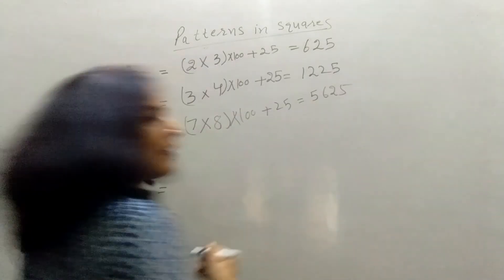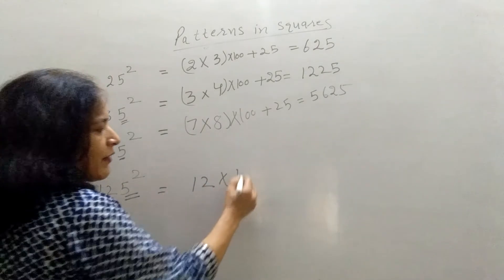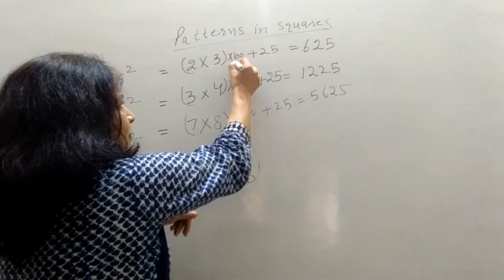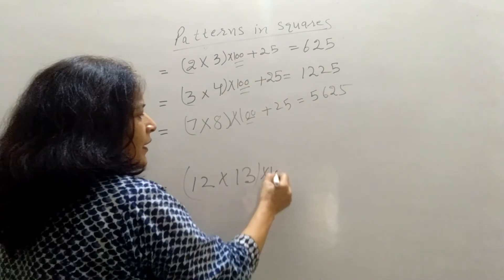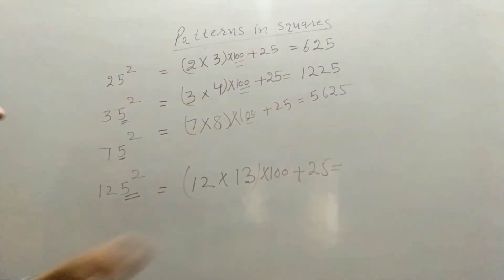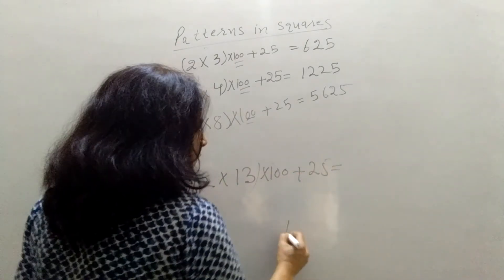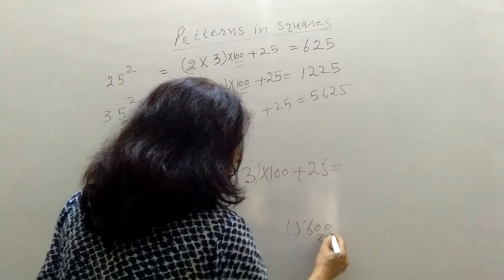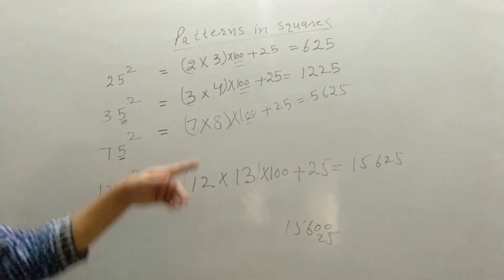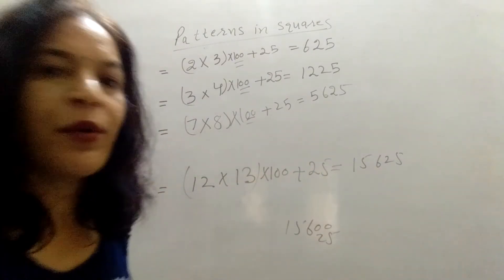Then 125. 5 one side. What is the number? 12. Successor of 12 is 13. So 12 into 13. Again same, multiply by 100 plus 25. So what is 12 into 13? 156. 156 into 100. So it is 15625. And you can check by multiplying 125 into 125.